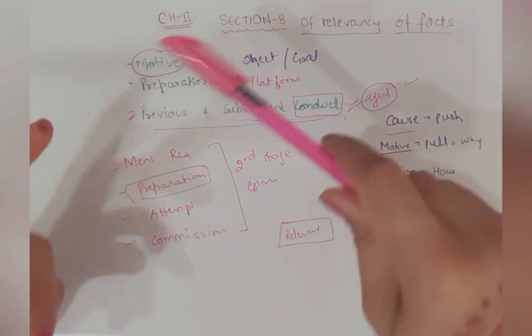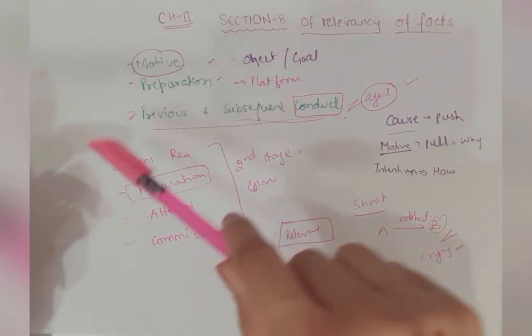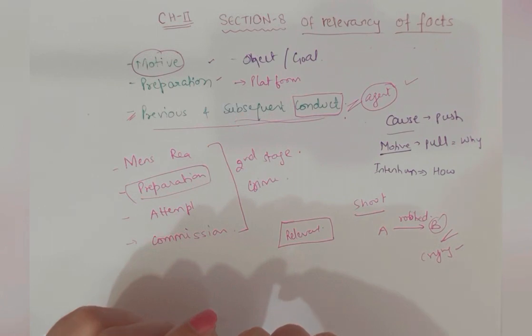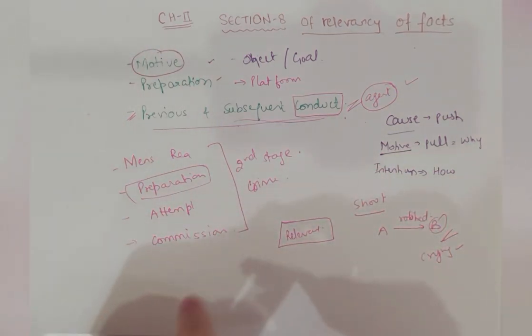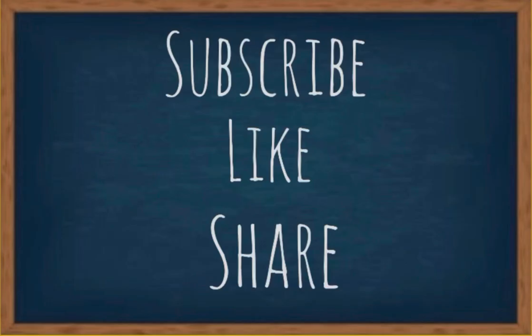So Section 8 talks about relevancy of facts. In relevancy of facts, you include motive, preparation, previous or subsequent conduct of party or his agent. For today it's enough. Stay tuned for the next video moving to very important Section 9. Till then goodbye, bye.